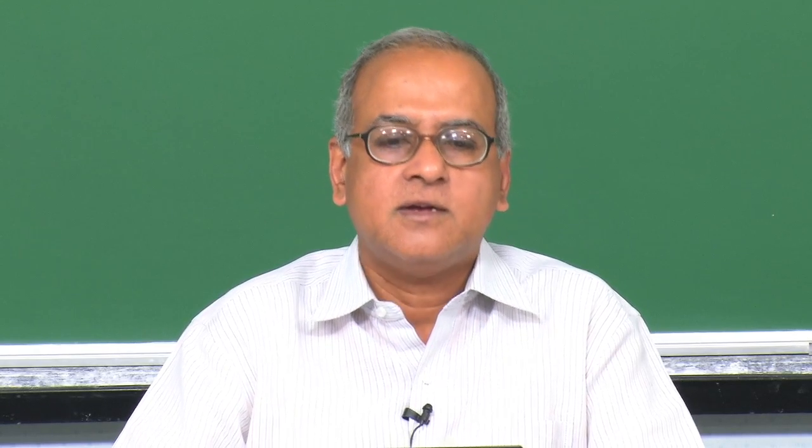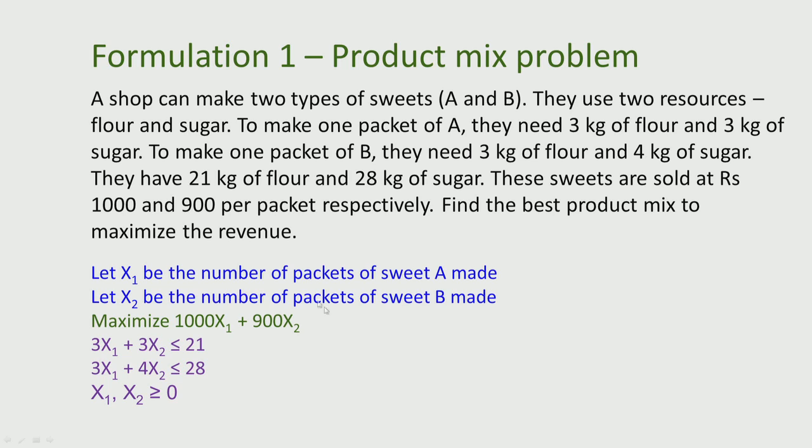The formulation of the product mix problem is: let X1 be the number of packets of sweet A made, let X2 be the number of packets of sweet B made. Maximize 1000 X1 plus 900 X2, subject to 3X1 plus 3X2 less than or equal to 21, and 3X1 plus 4X2 less than or equal to 28, with X1 and X2 greater than or equal to 0. This completes the linear programming formulation of the given product mix problem.